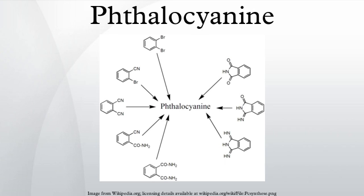Both feature four pyrrole-like subunits linked to form a 16-membered ring. The pyrrole-like rings within H2Pc are closely related to isoindole. Both porphyrins and phthalocyanines function as planar tetradentate dianionic ligands that bind metals through four inwardly projecting nitrogen centers. Such complexes are formally derivatives of Pc2-, the conjugate base of H2Pc.